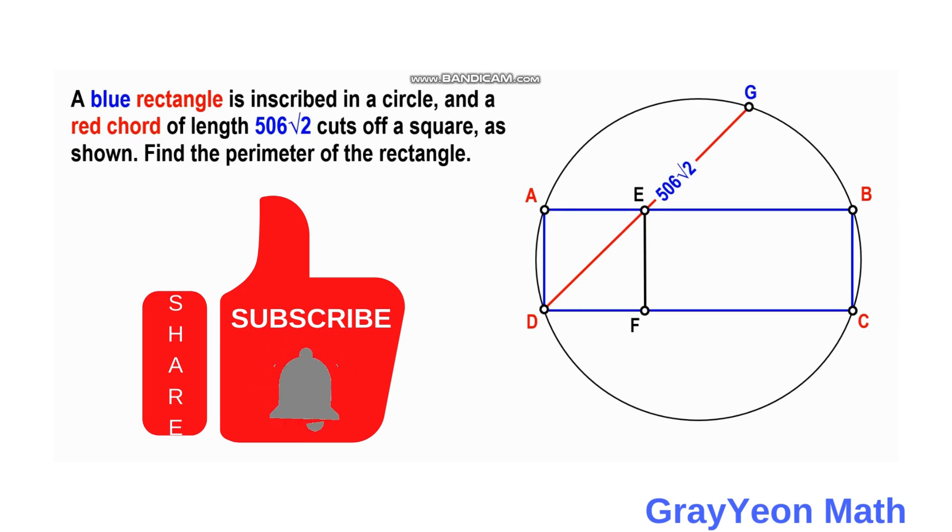Welcome to GrayYeon Math. We are asked to solve this problem. A blue rectangle is inscribed in a circle and a red chord of length 506√2 cuts off a square as shown. Find the perimeter of the rectangle.